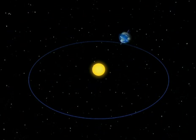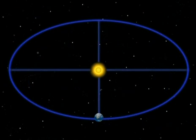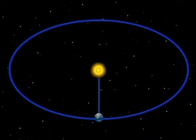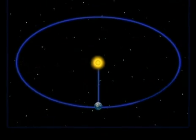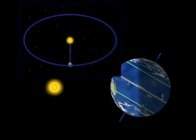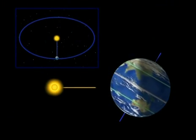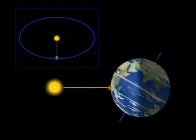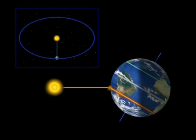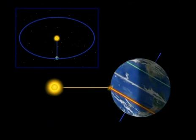With its tilted axis, the Earth faces the sun at different angles. When the Earth is here, at noon, the sun is vertically over the southern hemisphere — down under, its summer. At the same time, for most of the day, the northern hemisphere is in shadow — its winter.